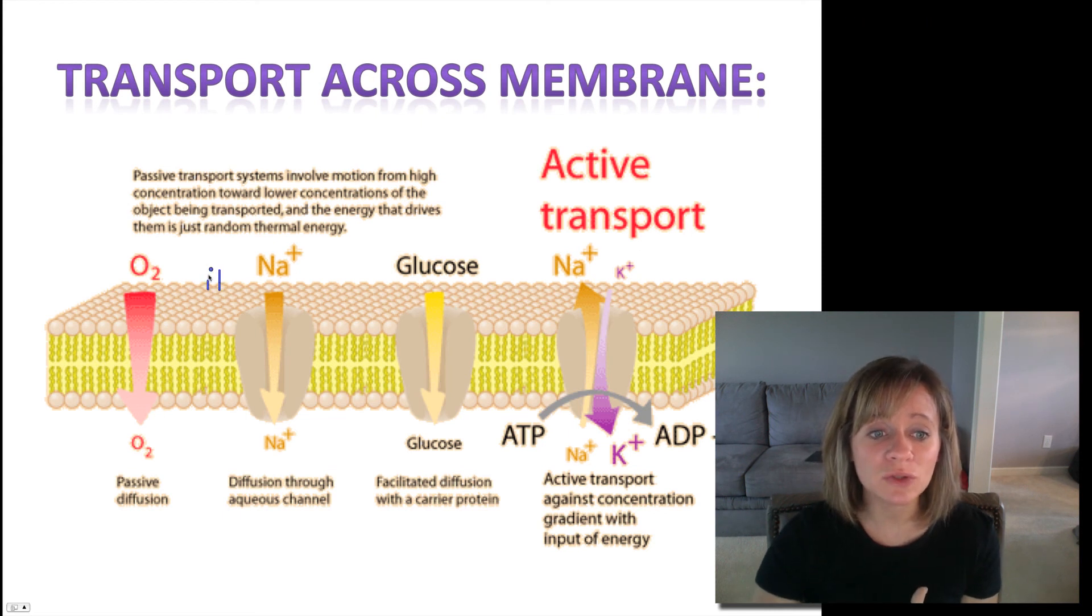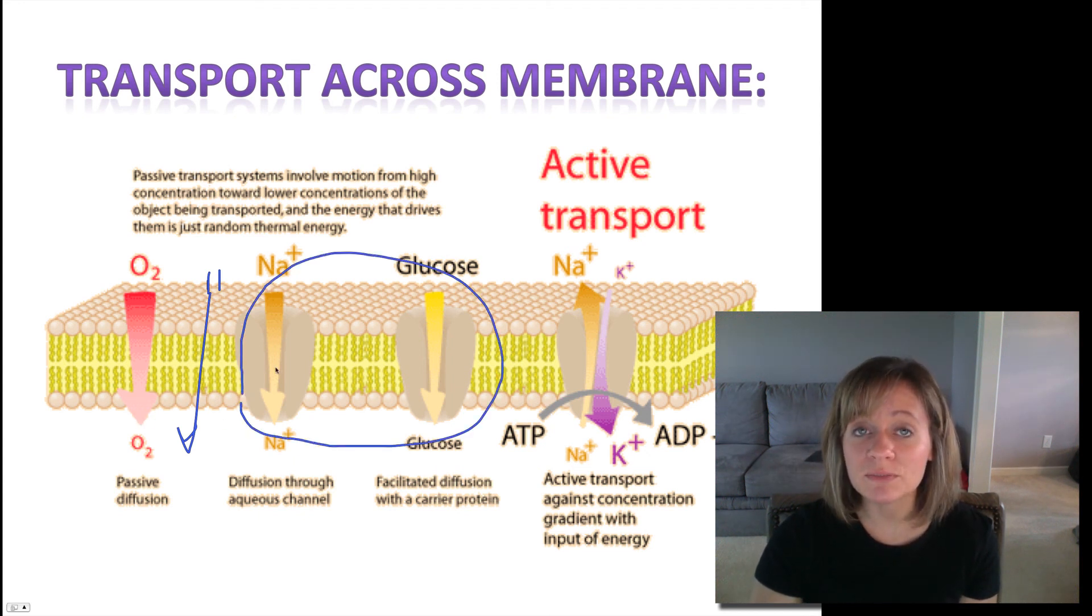And let's just do a quick summary. So diffusion from high to low. Simple, small molecules can do that like oxygen. Facilitated diffusion, large molecules and polar molecules need some protein help. And then active transport to go from low to high concentration.